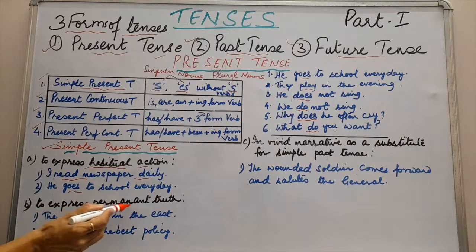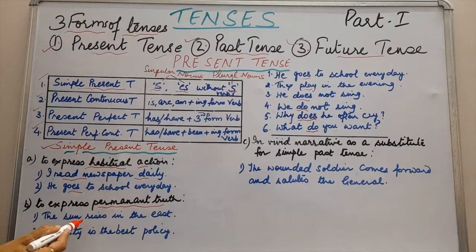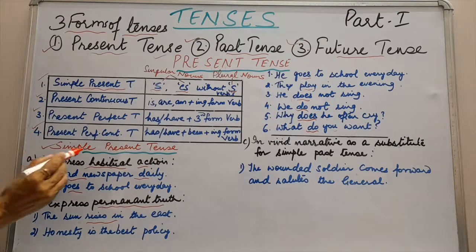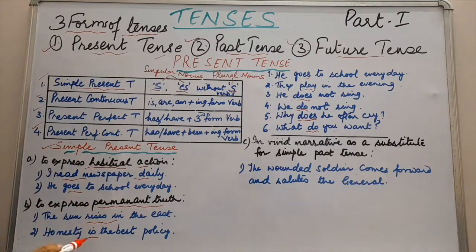Next, to express permanent truth. Example: the sun rises in the east — the sun doesn't change its direction, it always rises in the east, so simple present tense is used. Next: honesty is the best policy — this is a universal truth. Honesty will remain the best policy everywhere, anytime. So simple present tense is used.